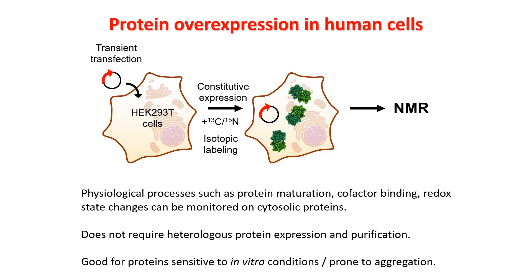We use HEK293T cells, which are very robust cells, relatively quick to grow and can be easily transfected, to perform transient transfection with many copies of the gene containing the protein of interest, inducing constitutive expression through a very strong, very active promoter. During protein expression we replace the growth medium with isotope-labeled growth medium, so the protein of interest is isotopically enriched with the isotopes you want to use for NMR observation.